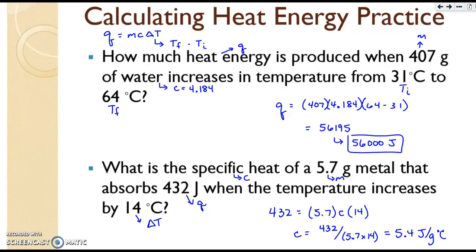For the second practice problem, instead you are looking for C. So you have the mass, you have the Q, and you have your change in temp. Again, you're just using the same equation, solving for a different variable. And you should get right around 5.4. And the unit for specific heat is always joules per gram degrees Celsius.